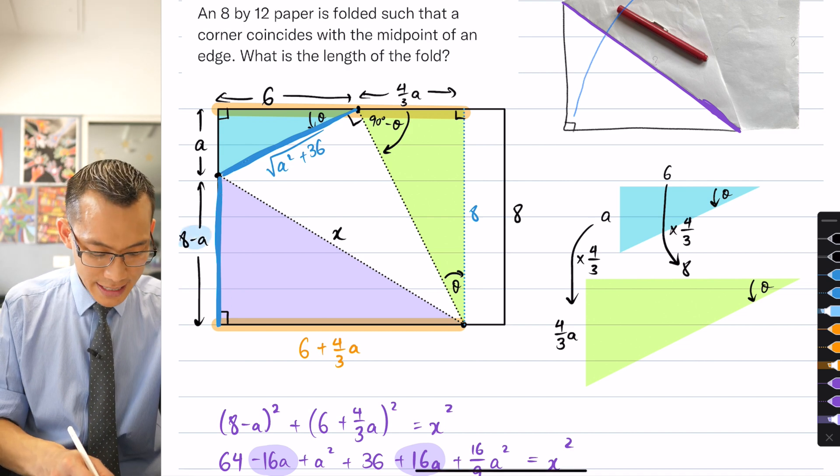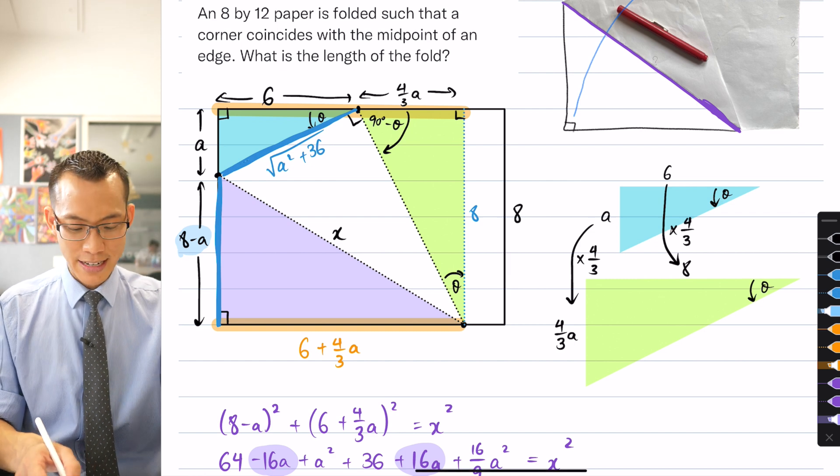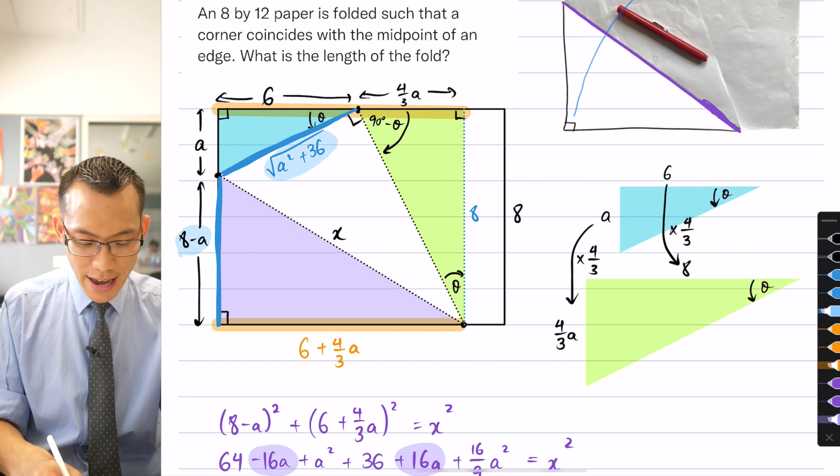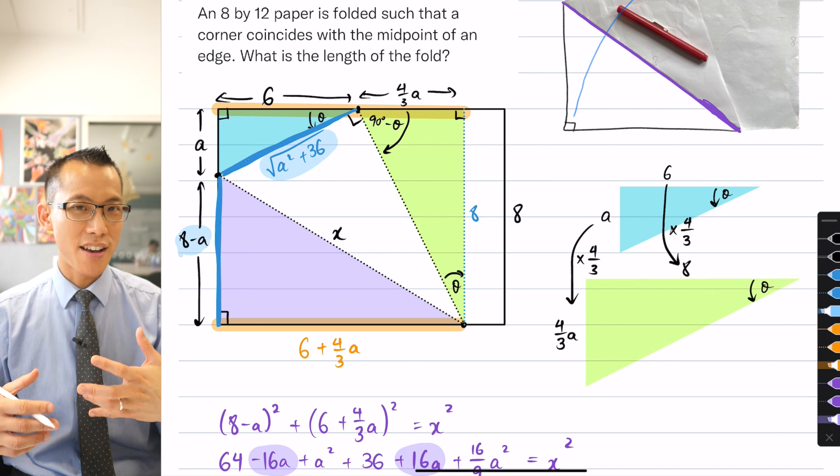But I have the same length stated in two different ways. You can see it right here. 8 take away A, looking at it from the side of that rectangle, and then the square root of A squared plus 36 using Pythagoras' theorem.